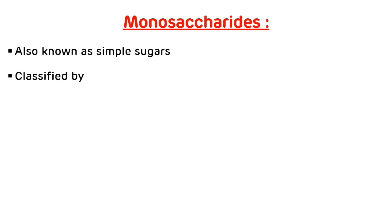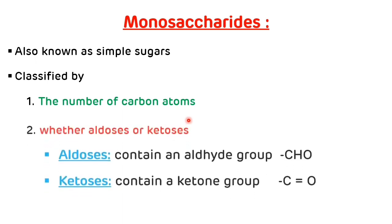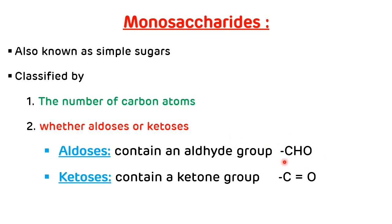Monosaccharides are basically simple sugar units and they are classified depending on the number of carbon atoms and the presence of functional groups. If an aldehyde group is present, they are known as aldoses or aldo-sugars. If a ketone group is present, they are known as ketoses or keto-sugars.